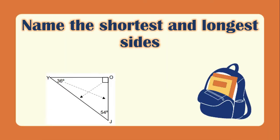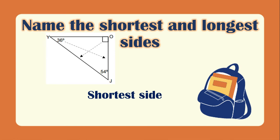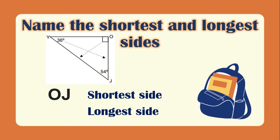Next, for this one, for the shortest side, which angle is the smallest? We have angle Y, and angle Y is opposite of side OJ. For the longest side, which angle is the largest? We have a right angle — it measures 90 degrees. So that is the largest angle, and that is angle O. The opposite of angle O is side JY.